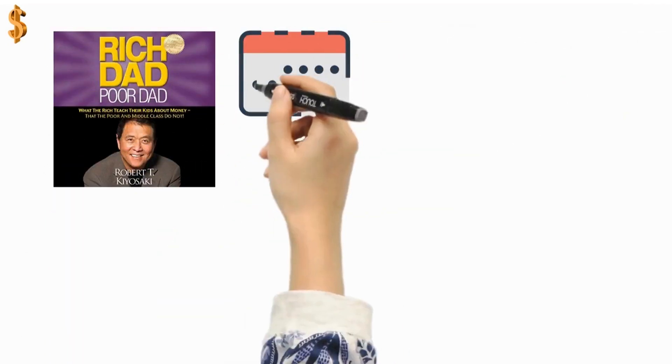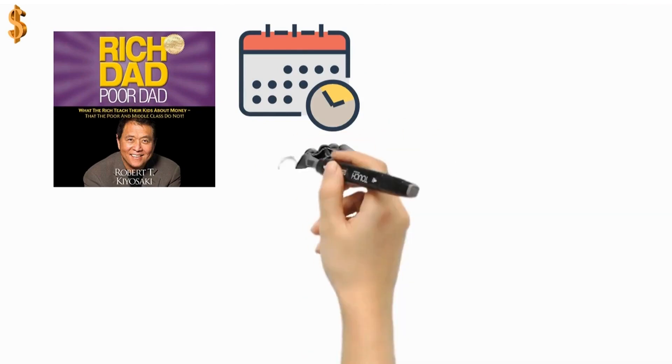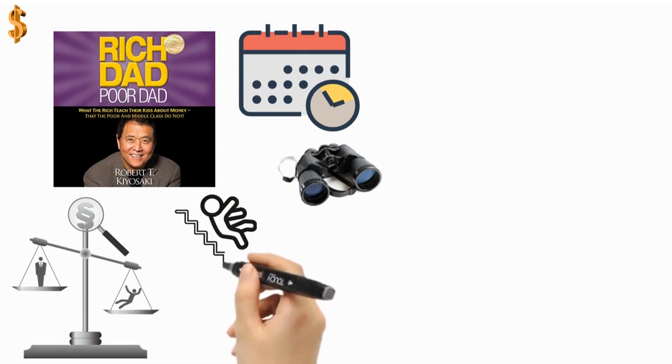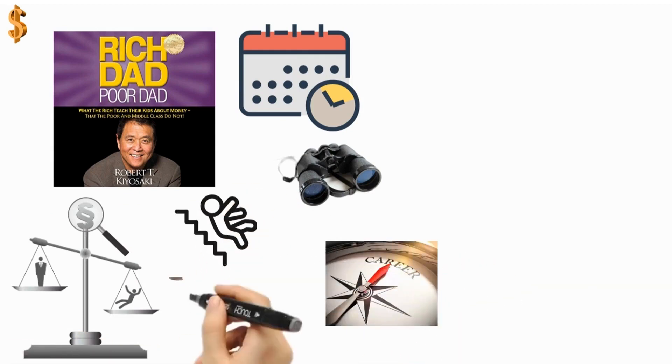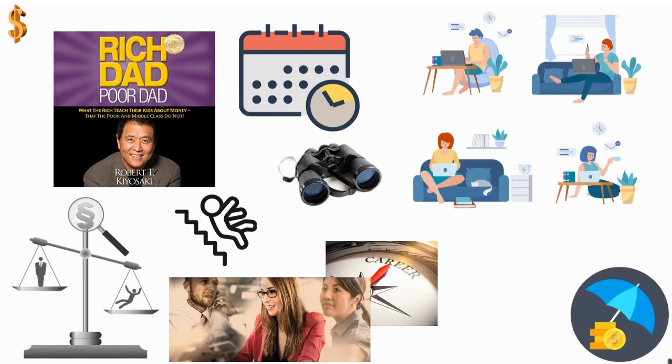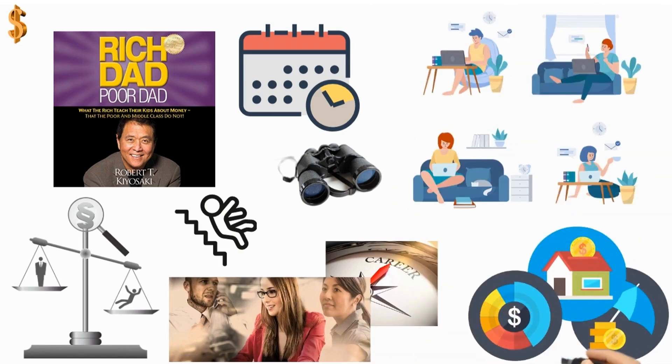Robert Kiyosaki, the author of the international bestseller Rich Dad Poor Dad, has spent decades studying the financial habits of the rich and the poor. He has observed that one common pitfall among young people is their tendency to focus solely on pursuing a career they love rather than prioritizing the acquisition of assets.